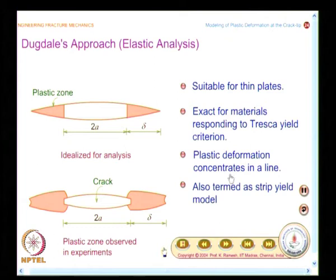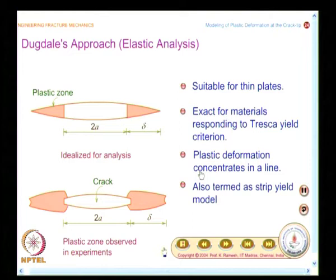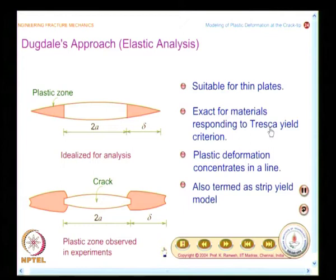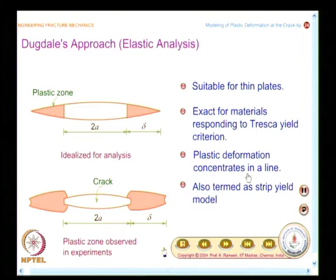Dugdale made another assumption. We had earlier looked at the shape of the plastic zone near the crack tip — a finite shape in front of the crack tip. For Dugdale's model, he assumed that plastic deformation concentrates in a line. This is consistent with the thin plate and Tresca yield criterion assumptions. Because plastic deformation concentrates in a line, the model is also termed the strip yield model.